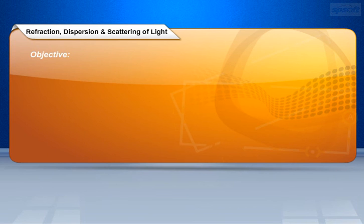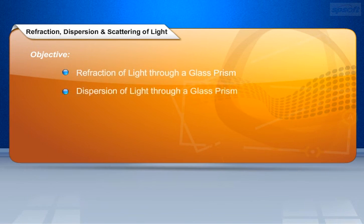At the end of this lesson, you will be able to understand about refraction and dispersion in a glass prism when light passed through it, atmospheric refraction and scattering of light.